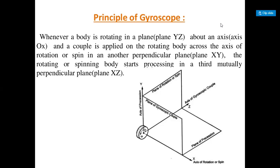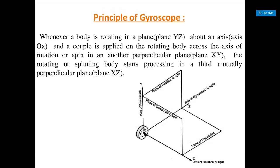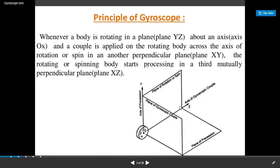When a body is rotating in one plane — suppose this is the axis of gyroscopic couple — or if the body is rotating in plane X, Y, or Z, the couple is applied on the rotating body across the axis of rotation or spin in another perpendicular plane. The axis of gyroscopic couple is perpendicular to the axis of rotation and also the spin.